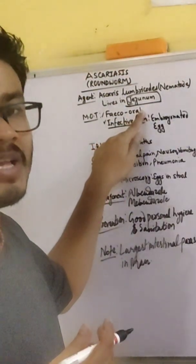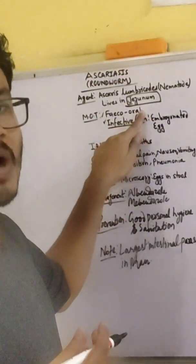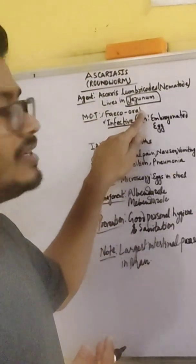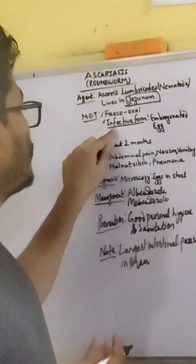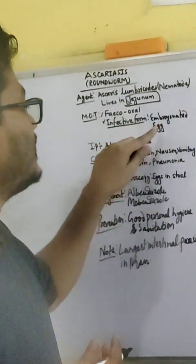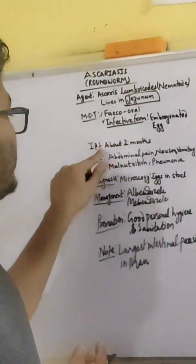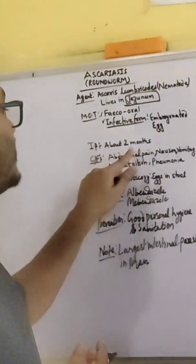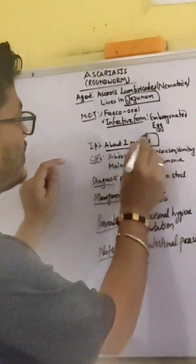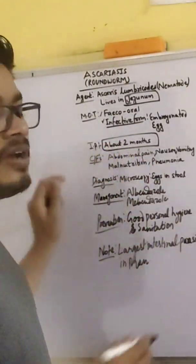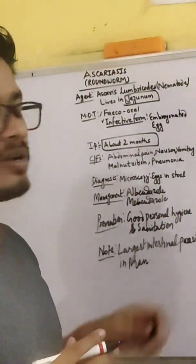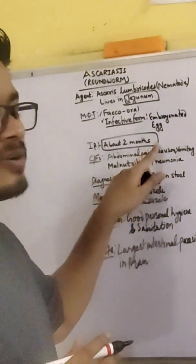Whenever we have contact with stool, we must wash our hands with soap. The infective form is the embryonated egg. The incubation period is about 2 months — near about 2 months for signs and symptoms to occur.